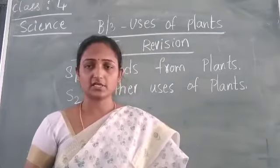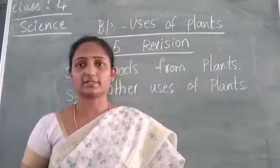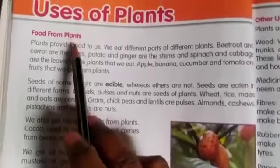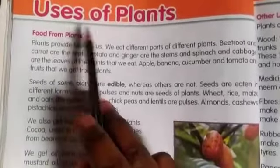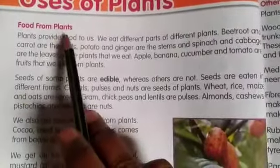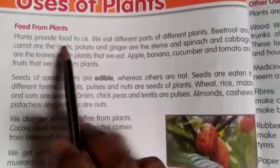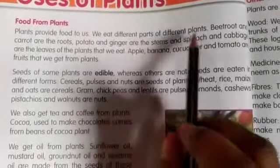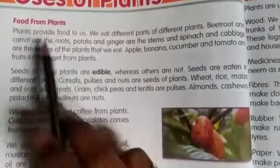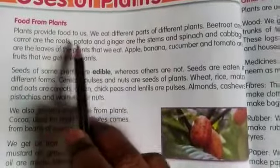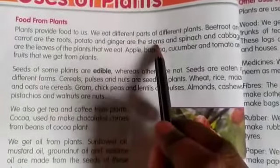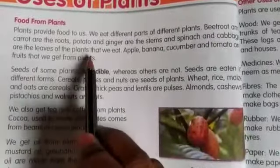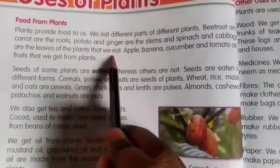Now let us read the lesson, children. Open your reader, children, page number 22: uses of plants. Food from plants — plants provide food to us. We eat different parts of different plants. Beetroot and carrot are the roots. Potato and ginger are the stems. And spinach and cabbage are the leaves of plants that we eat.